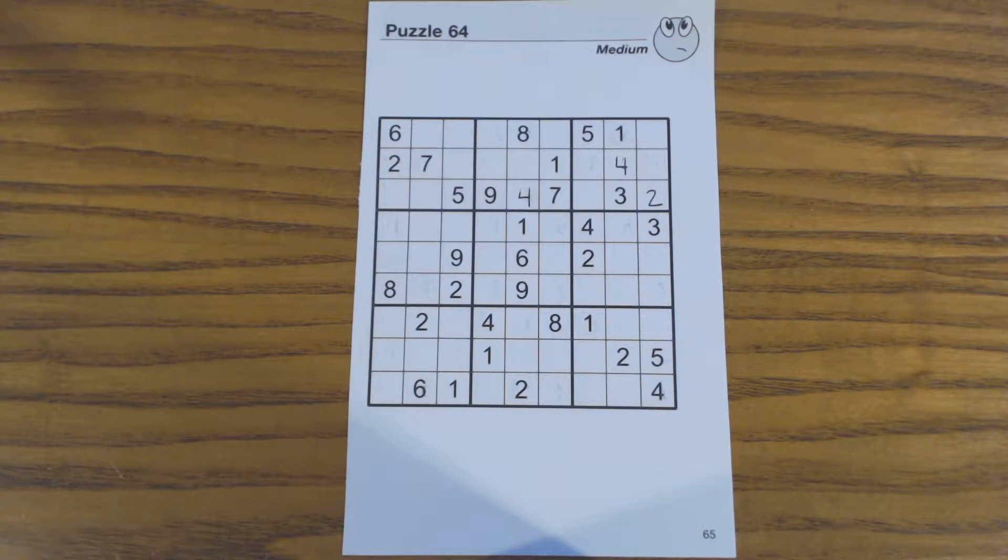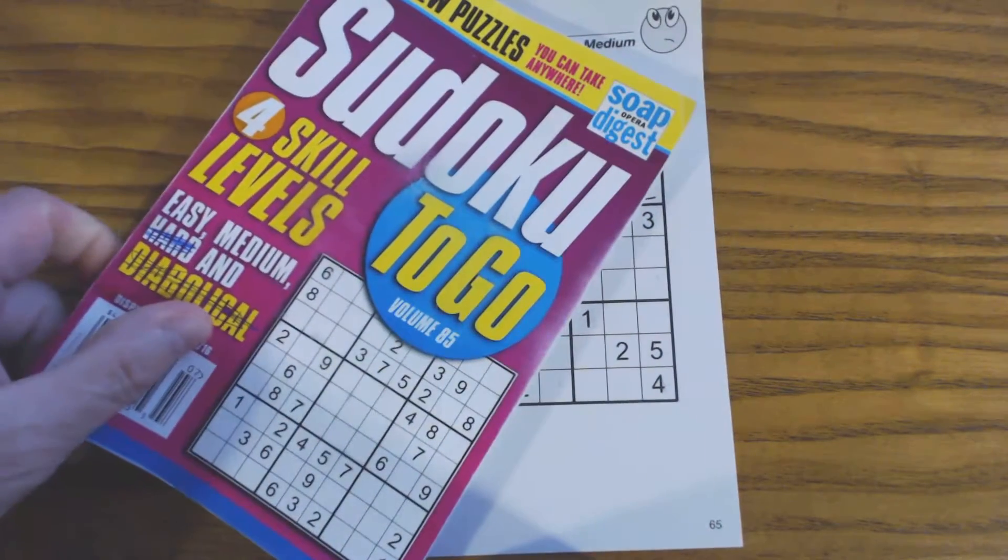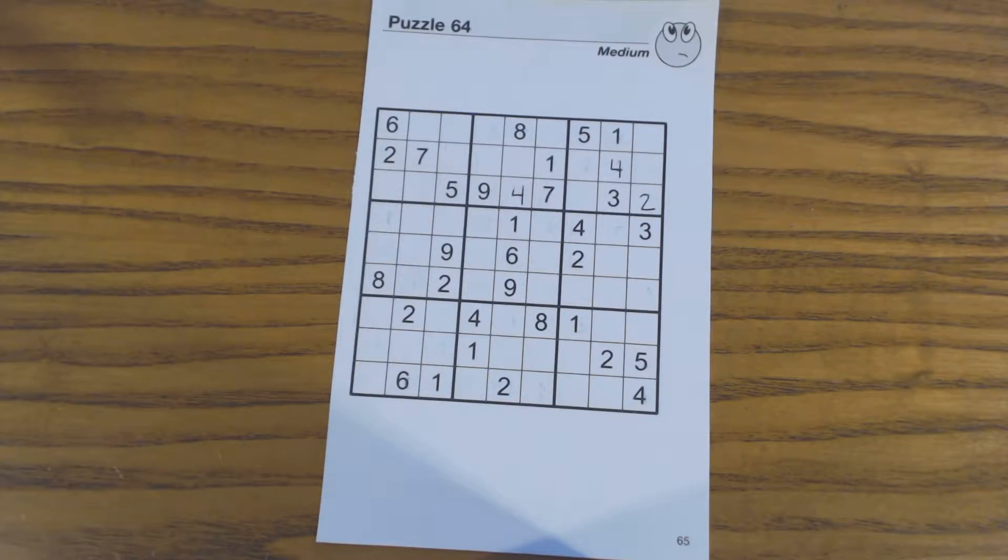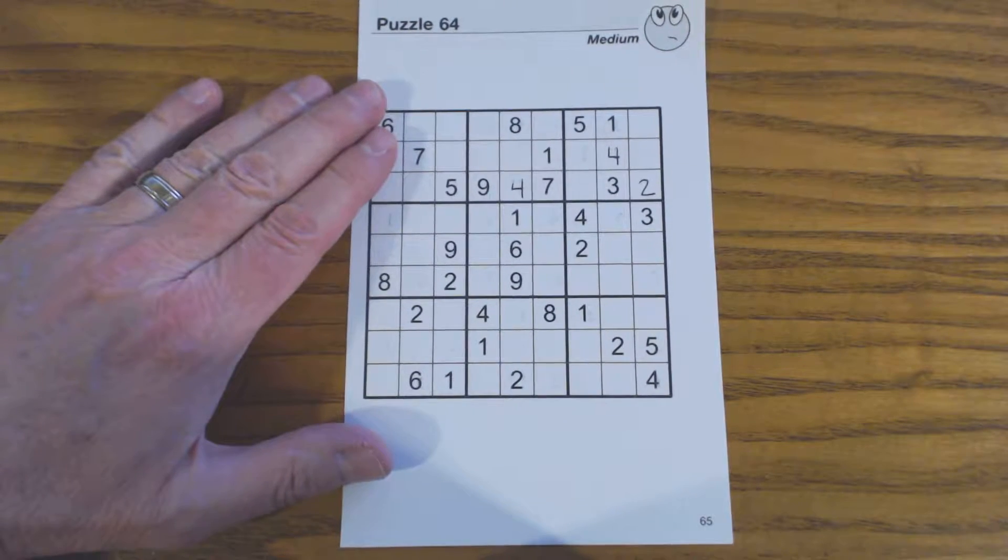This is puzzle number 64 from Sudoku2Go volume 85 by Soap Opera Digest. Okay, well, let's get started on this.